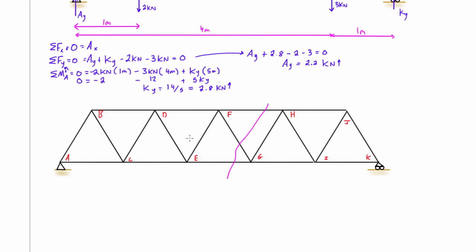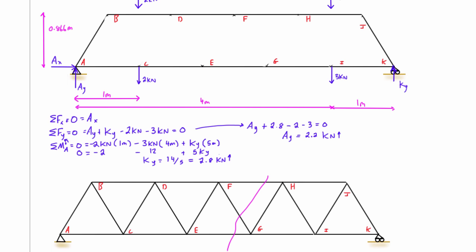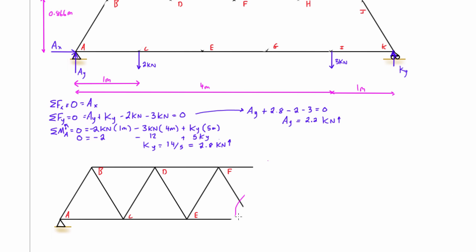So what we want to do is we want to just pick the left hand side or the right hand side and cut it in half and just draw the free body diagram of that side. So I'm going to pick the left hand side. You can pick either. But this is the free body diagram once we remove the other side.